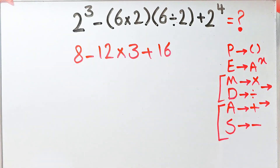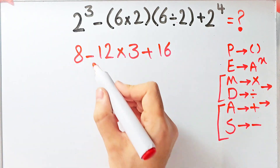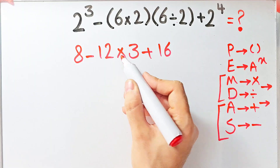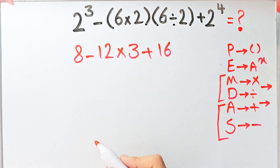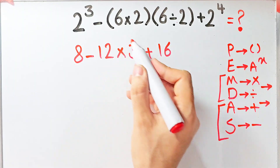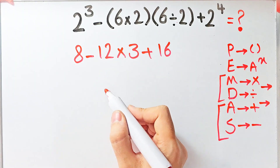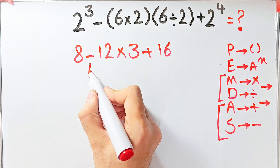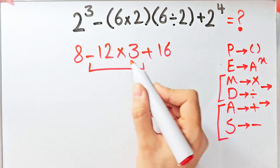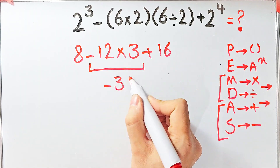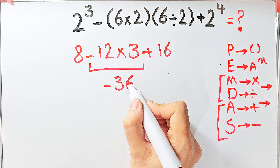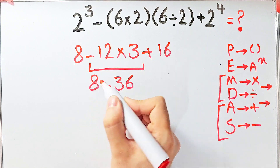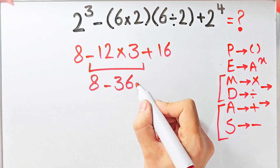In this step we have subtraction, multiplication, and addition. First we simplify the multiplication: twelve times three equals thirty-six. Now the question is eight minus thirty-six, then plus sixteen.